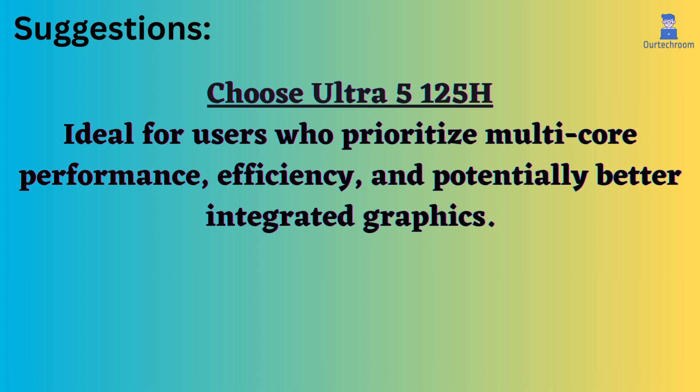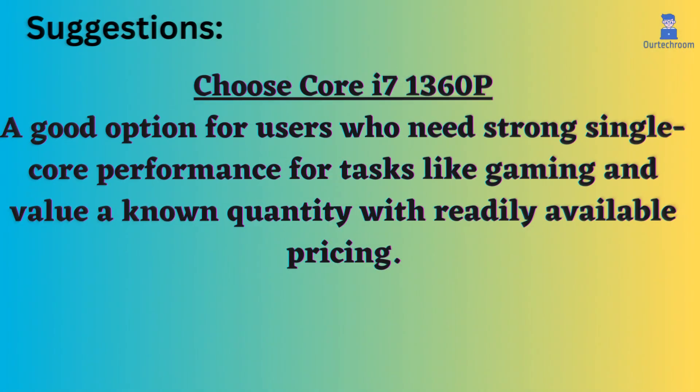Choose the Core Ultra 125H if you prioritize multi-core performance, efficiency, and potentially better integrated graphics. Choose the Core i7-1360P if you need strong single-core performance for tasks like gaming and value a known quantity with readily available pricing.